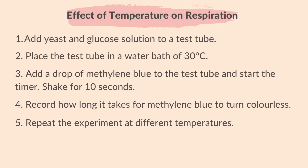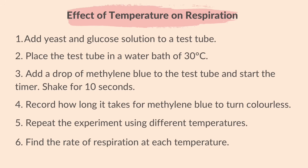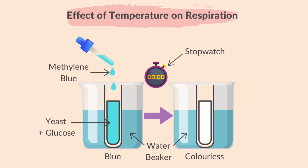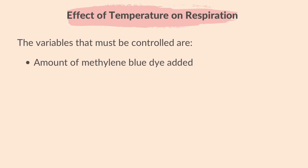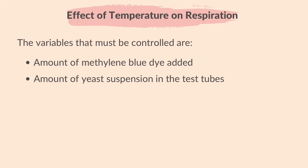The independent variable, or the factor we are changing, is temperature. We can do this using water baths of different temperatures. The rate of respiration is the dependent variable. The variables that must be controlled are: amount of methylene blue dye added, amount of yeast suspension in the test tubes, concentration of glucose, and pH.